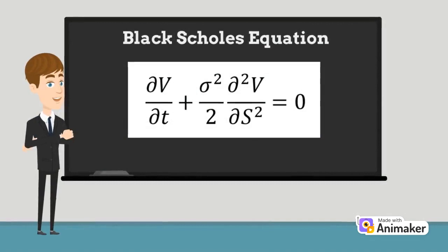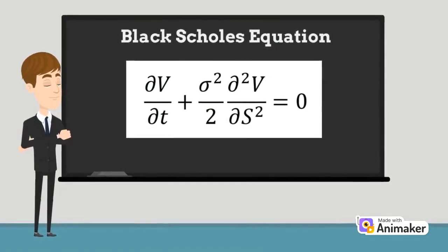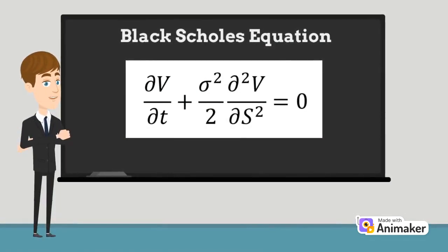The only difference between the two equations is the quantities which are inputted into the equation. The Black Scholes equation deals with the variables v, t, s, and sigma.